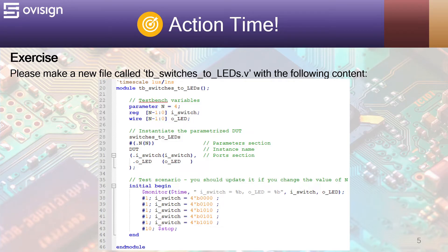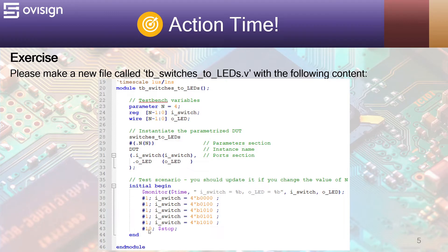We use the reg type for the inputs and the wire type for the outputs. At line 28 we instantiate the design. We connect the parameters together, and next the module ports with the testbench variables. At line 36 we have our test scenario with an initial procedure. After this we use dollar monitor to see how the input and output behave. Next at every microsecond we change the value of the input of the switch. This pattern should easily test all our 4 bits. You can add extra patterns if you want to play with the simulation. At line 43 we stop the simulation.